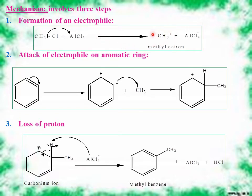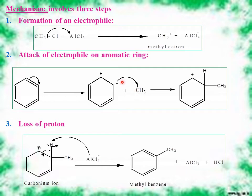In step two, the electrophile attacks the aromatic ring. The pi system of benzene is involved — the pi bond shifts toward a carbon, giving it a negative charge while the adjacent carbon gets a positive charge. The negatively charged carbon attacks the methyl cation liberated from step one, and a carbonium ion is formed. Wherever the methyl cation attacks, that carbon always retains its hydrogen, forming the carbonium ion intermediate.